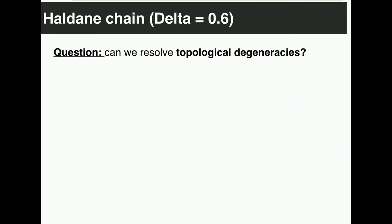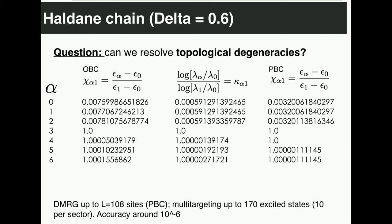We checked the so-called Haldane chain, a spin-1 Heisenberg model known to support topological phases with interesting features. In particular, for these topological phases in 1D, you expect the entanglement spectrum to be at least two-fold degenerate; for the particular point we were looking at, it has to be four-fold degenerate. Here I show directly the table of universal entanglement ratios — the first four have to be degenerate, referring to the first topological multiplet. And we see essentially exact degeneracy at the level of 10 to the minus 6. With this check we were convinced that at least in one dimension this is working extremely well.